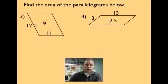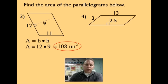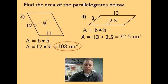Would you try 3 and 4, please? So we'll start out with 12 times 9. That's going to be equal to 108 units squared. Number four, make sure that you're getting the base and the height here. So it's going to be 13 times 2.5, and that's going to be equal to 32.5 units squared.